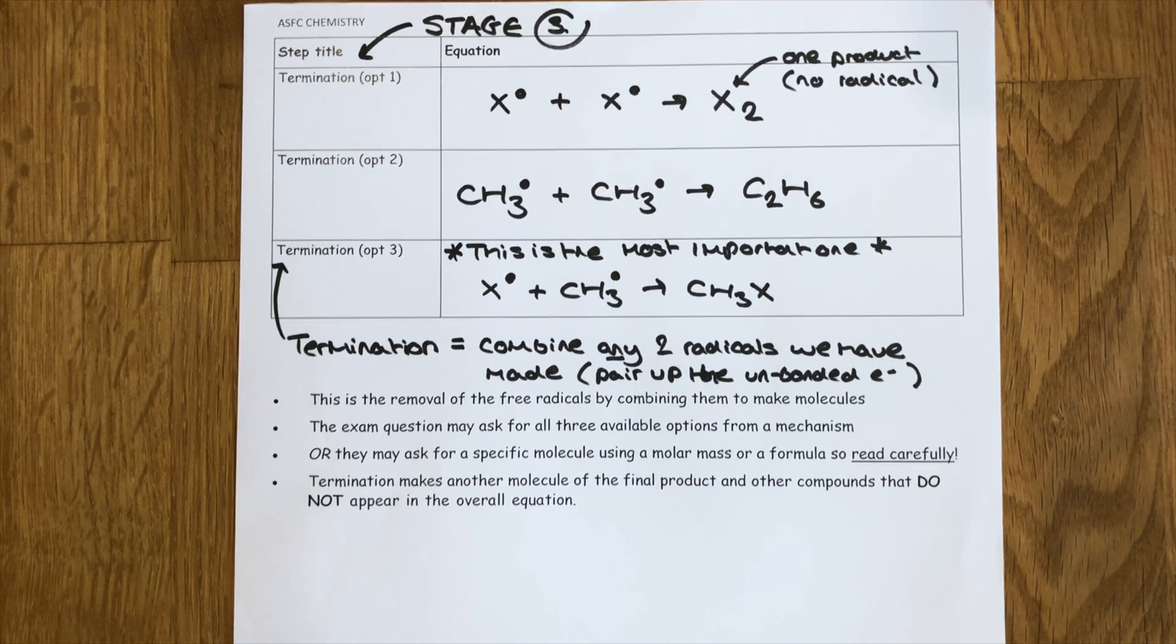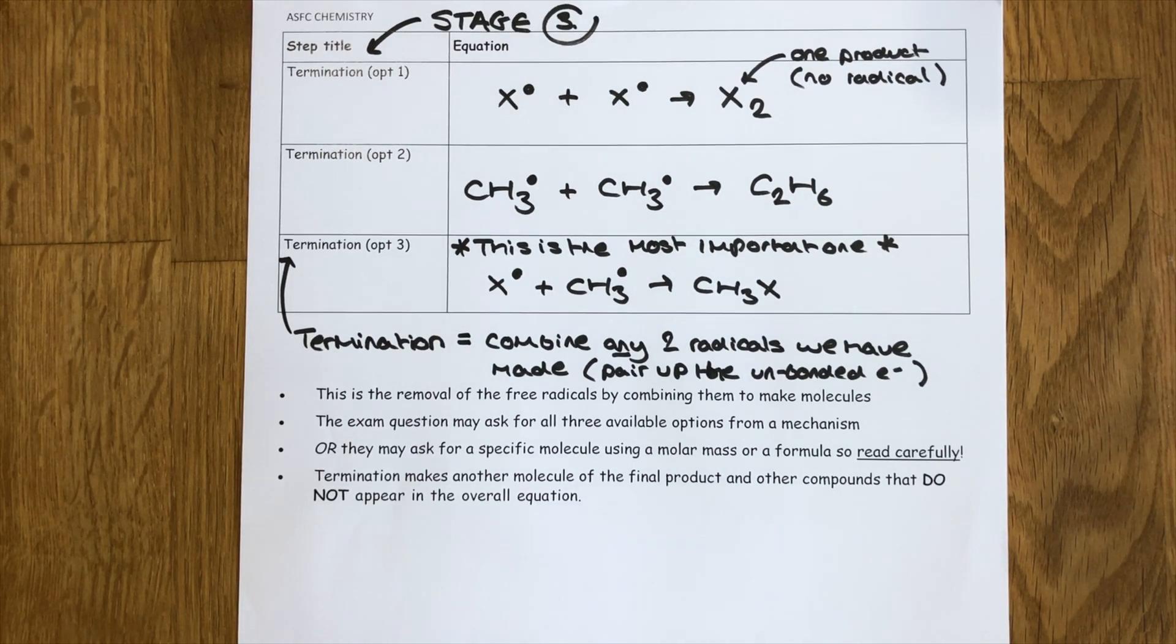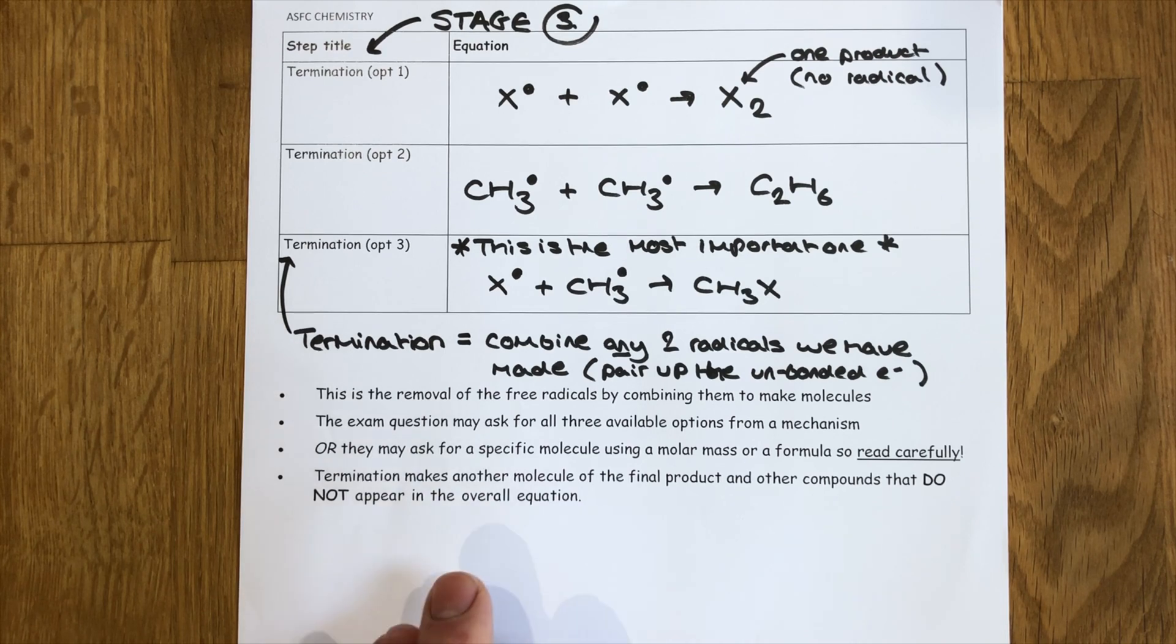What might also happen towards the end of the process is we can end up with further substitution and you'll find that that comes up a lot in the exam questions. But I really want to emphasize to you here that this final stage, which follows the initiation and propagation stages that we've seen already, this final stage of termination takes any two radicals and combines them together to make a molecule which no longer has that radical dot representing a single unpaired electron.